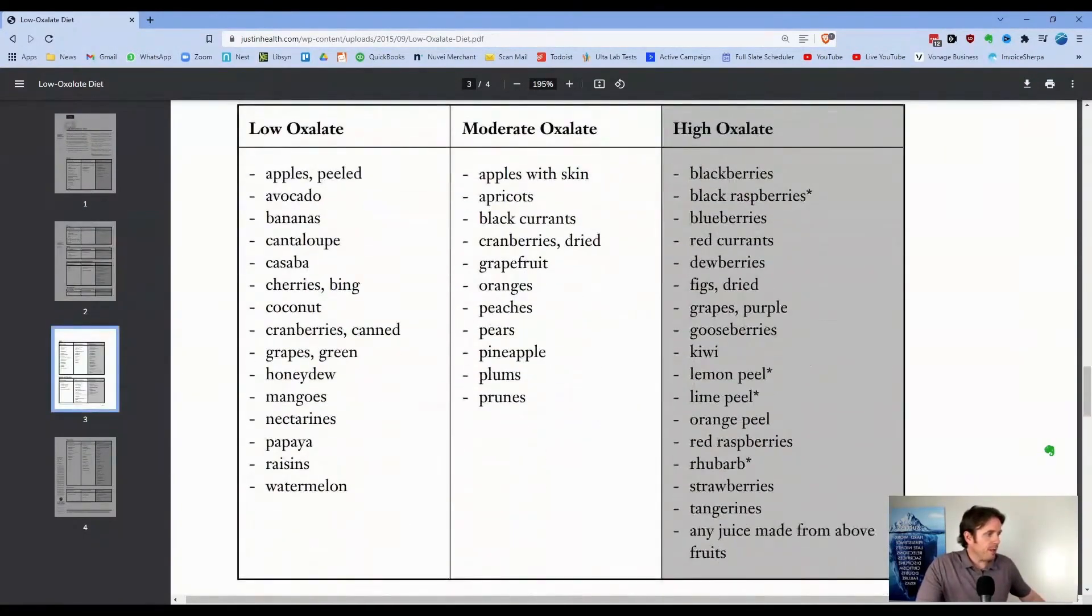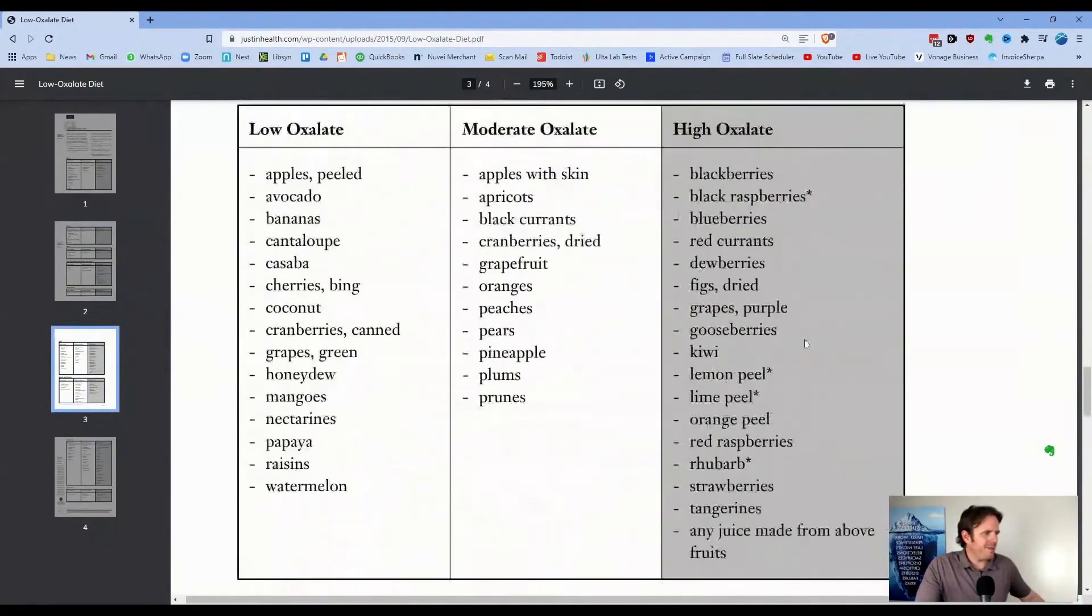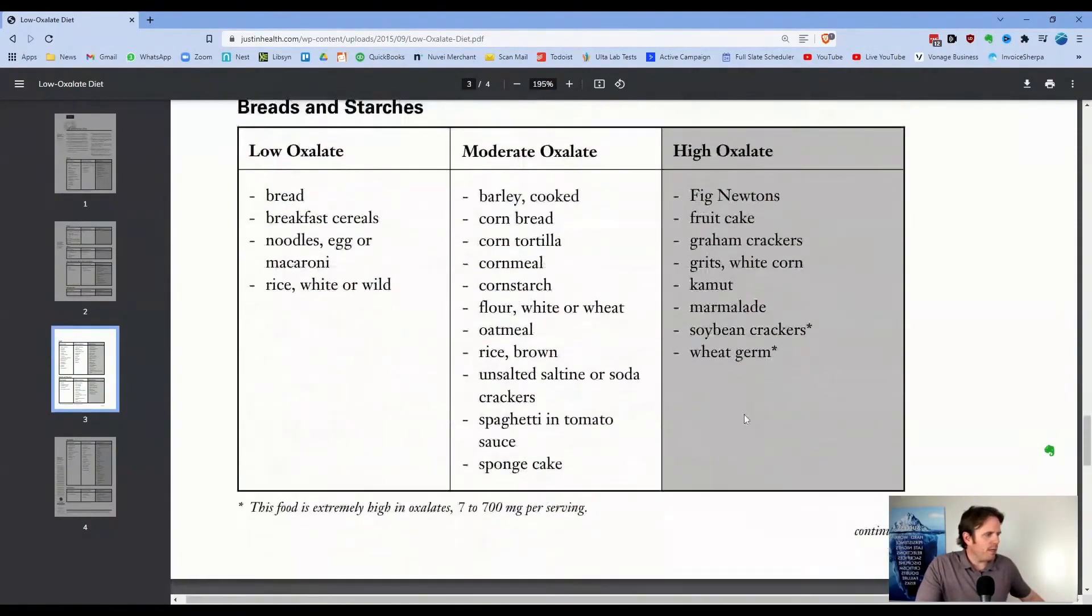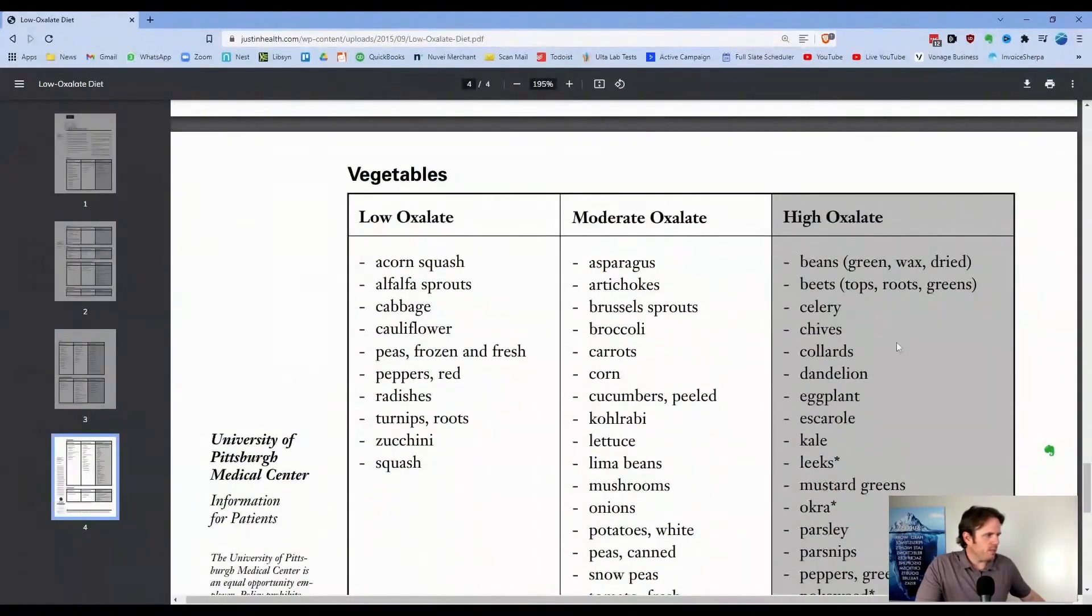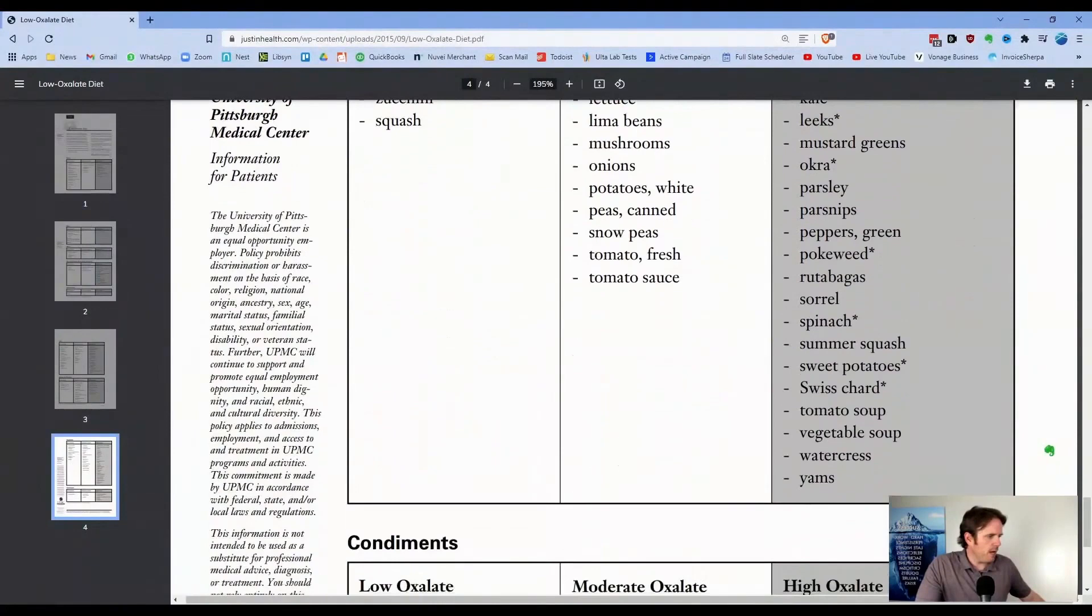On some of the fruit, you can see a lot of berries, which kind of stinks. But you're gonna see it more on the vegetables, especially the spinach. So beans, celery, chives, there you go, spinach, very, very high.